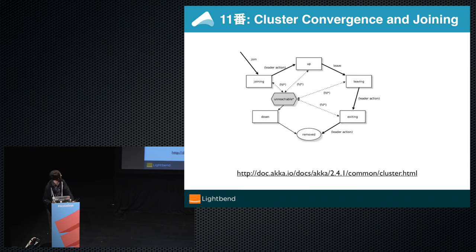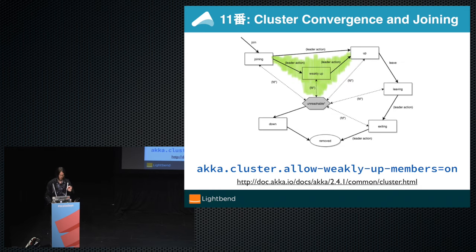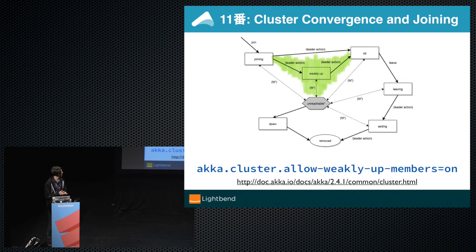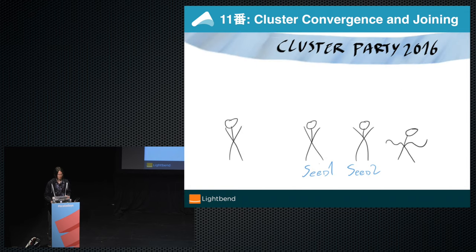Here's a mini diagram from the docs explaining all transitions between states. From the top left: joining, up, leaving, exiting, then removed — a very simple lifecycle. Today we're going to talk about a feature you may not have seen: 'allow weakly up members'. This is for the scenario where you're under heavy load, maybe even with cluster partitions, but you still need to grow the cluster. You need to enable it explicitly. Let's talk about a cluster party — joining a cluster.